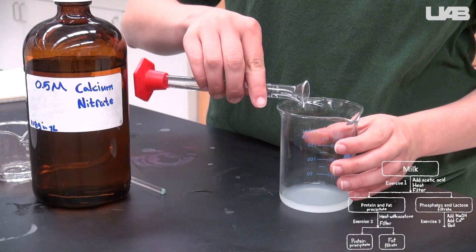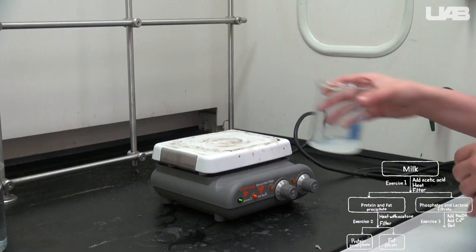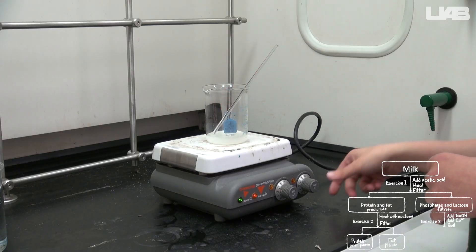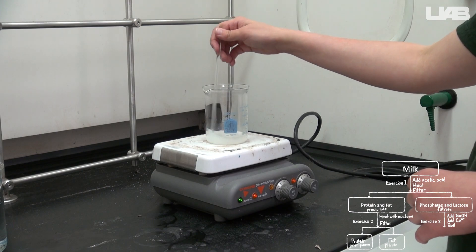Add 10 milliliters of calcium nitrate and move to the hot plate. Heat it on a medium setting while stirring until the volume has been reduced by about 1 third. This will take about 15 minutes.